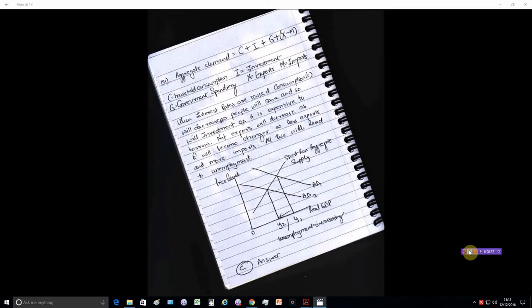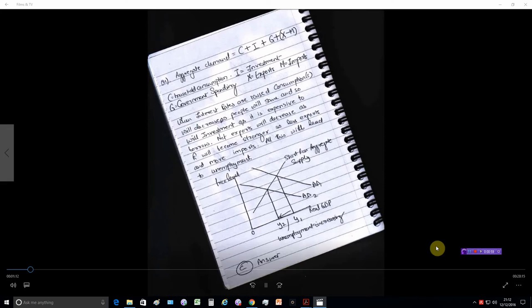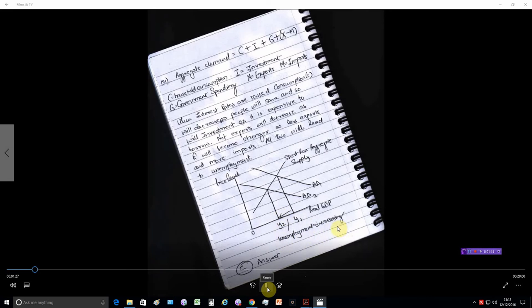As demonstrated in the diagram, we have shown an inward shift from AD1 to AD2. You've got the short run aggregate supply curve, price level, point of origin, real GDP and national income as Y1, Y2, and a shift to the left. So unemployment is increasing and C is the answer.